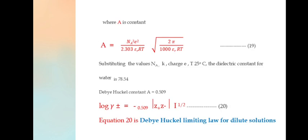The expression is ln(γ±) = -AZ+Z-√I, where A is a constant. A = NA²e²/(2.303εR²T²)·√[2π/(1000εRRT)]. Substituting for the values of Avogadro number, charge, temperature, dielectric constant of water as 78.4, Debye-Hückel constant A equals 0.509.